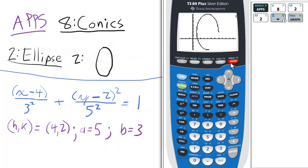Now we press graph, and notice it appears much differently from the horizontal major axis ellipse. It's much taller and thinner.